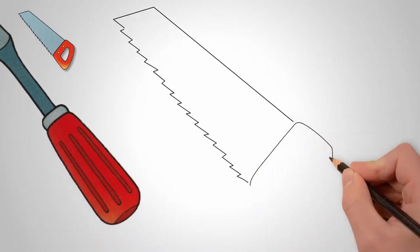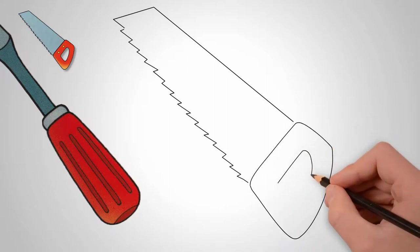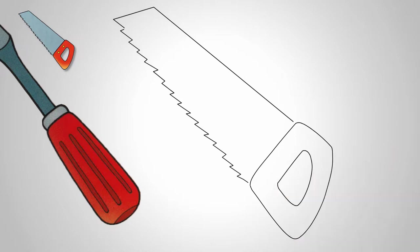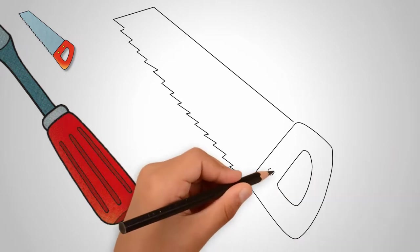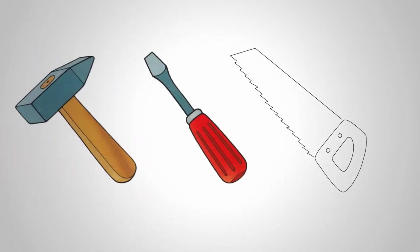Now draw the saw handle. The handle is almost oval. Draw a hole in the middle of the handle. So it will be convenient to hold our saw with your hand. We draw two fastenings which hold a cloth and the saw handle as one hole. Paint the saw.